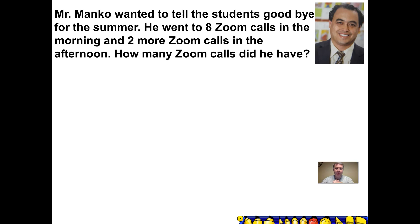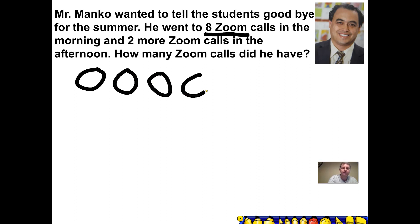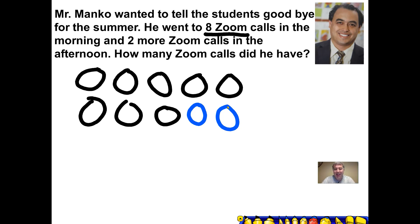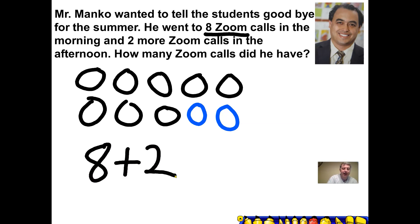All right, let's check your work. He had eight zoom calls — I'm going to use circles: one, two, three, four, five, six, seven, eight. Then in the afternoon he had two more: one, two. I don't even need to count that because I was doing five groups — that is ten zoom calls altogether. Five and five is ten, friends. Because he had eight and then added two more, we're going to write an addition sentence: eight zoom calls in the morning plus two more in the afternoon equals ten. Did you get that, friends? Great job. That is our last story problem.